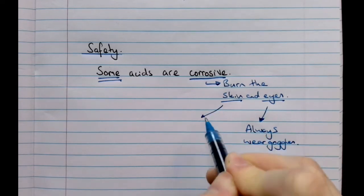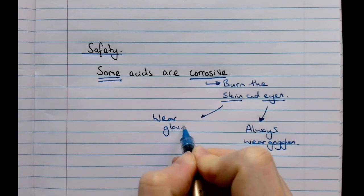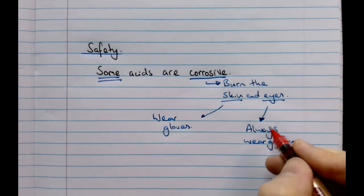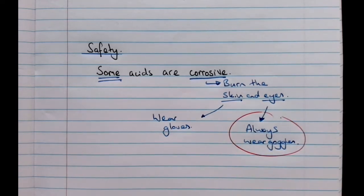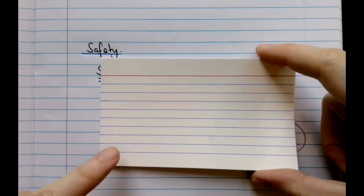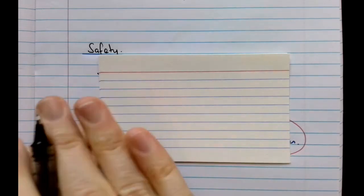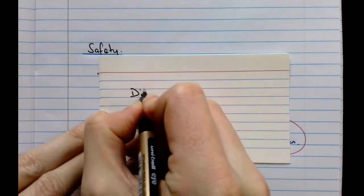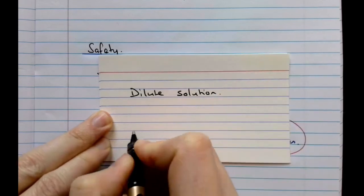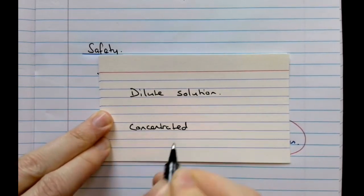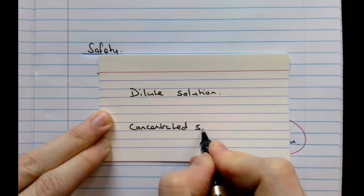The number one safety precaution when dealing with acids is always wearing goggles. Now, for today it would be good to make sure you remember the difference between dilute and concentrated. Get yourself a flashcard or a piece of paper you can turn over. On one side write 'dilute solution' and 'concentrated solution'.